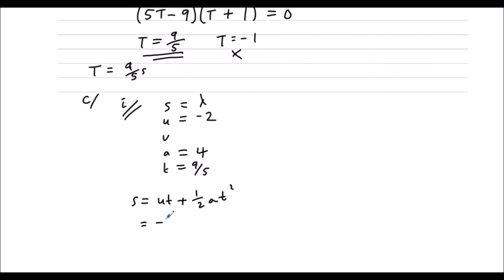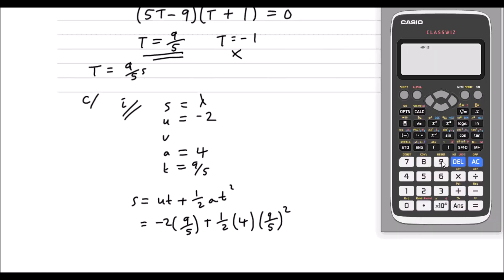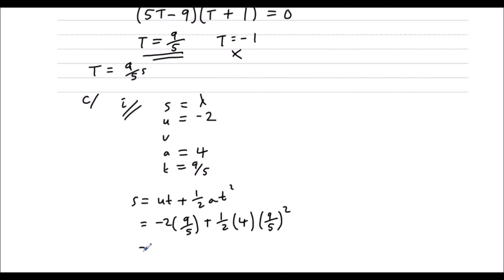So s is going to be negative 2 times 9 fifths plus half of 4 times 9 fifths squared. We'll just type this in the calculator. We have negative 2 times 9 over 5, plus half of 4 times 9 fifths squared. And that's 72 over 25, or 2.88 meters.